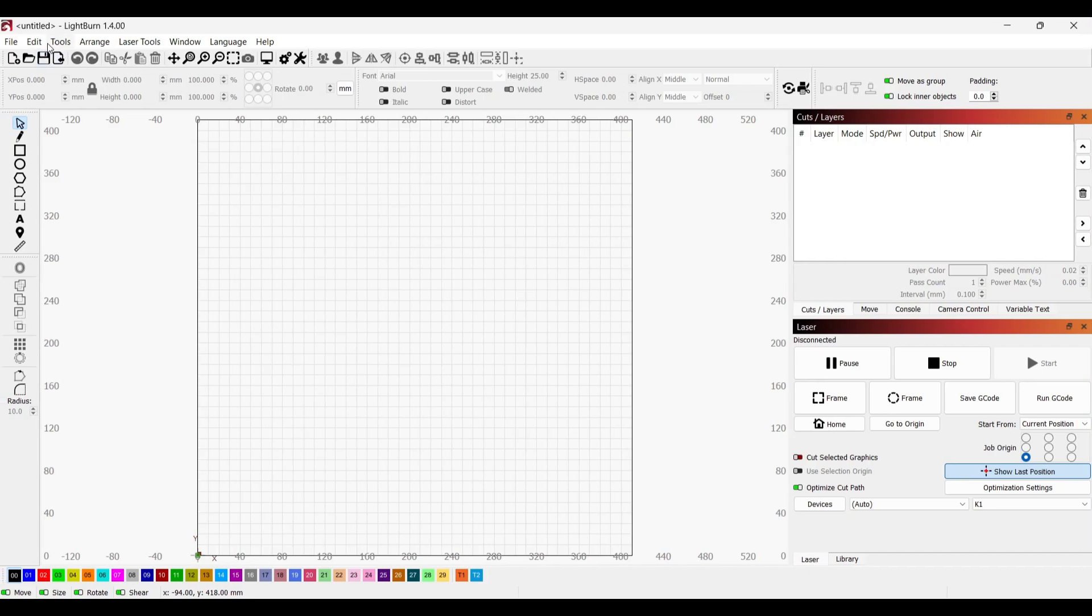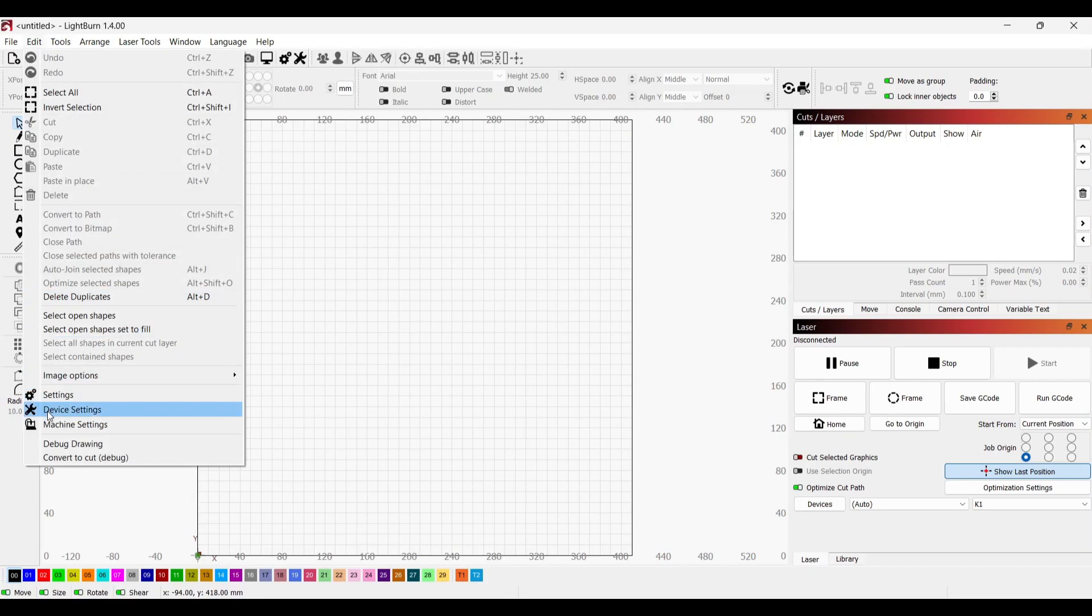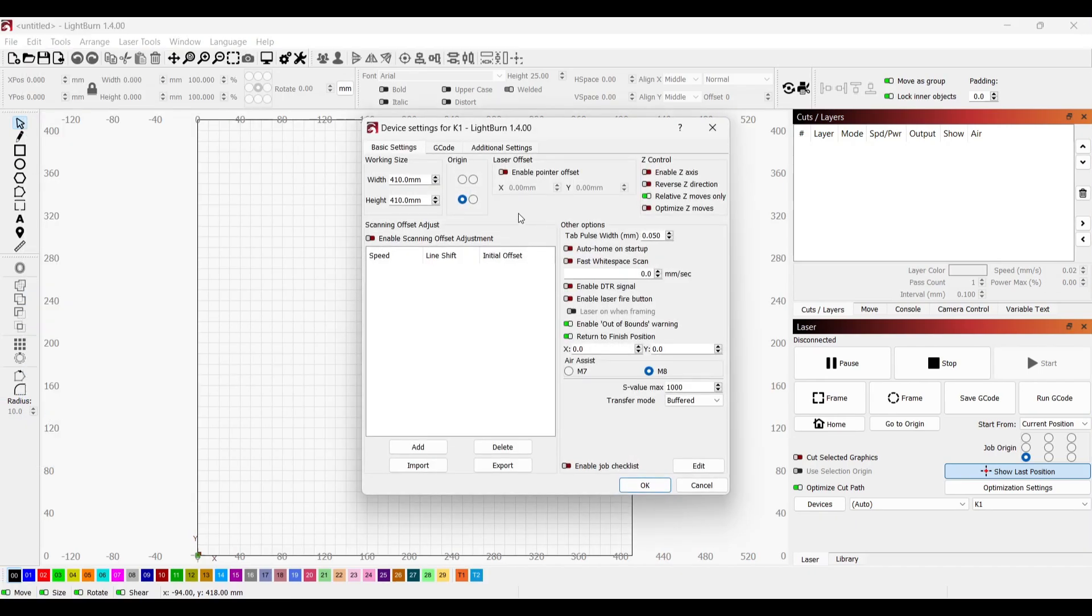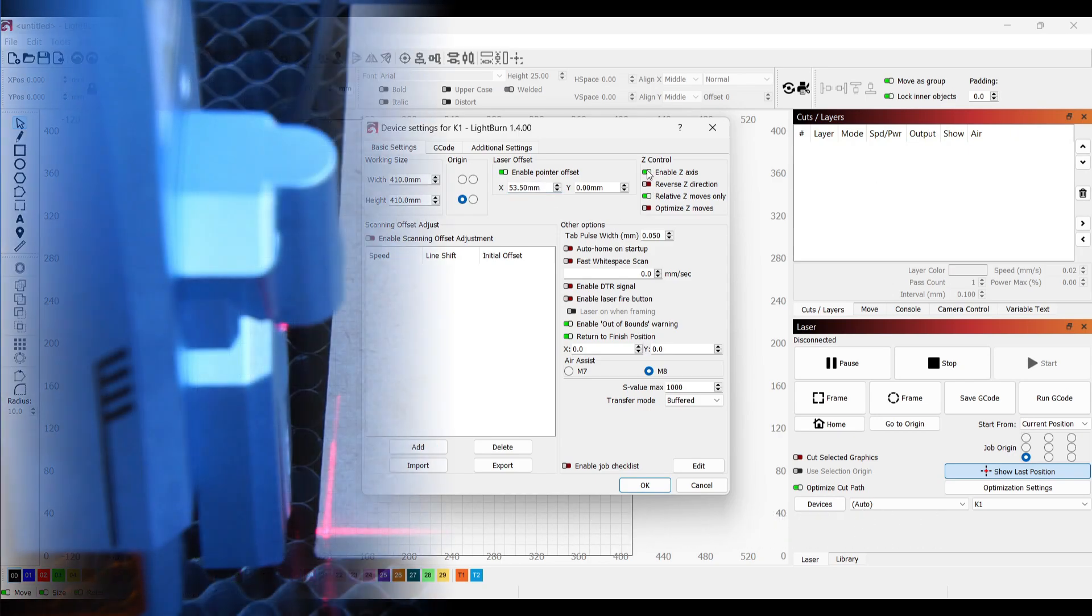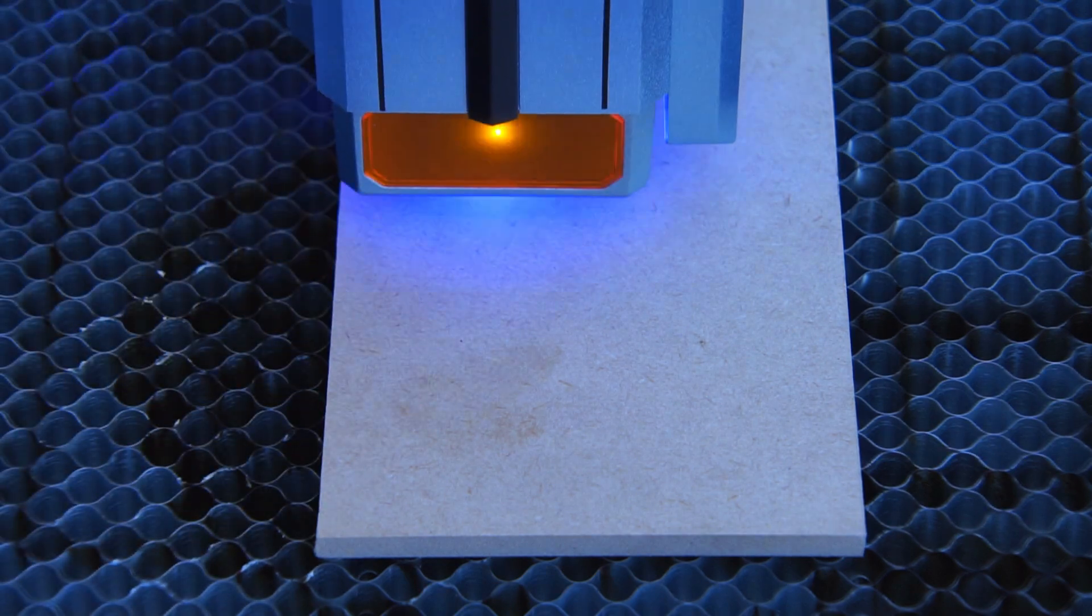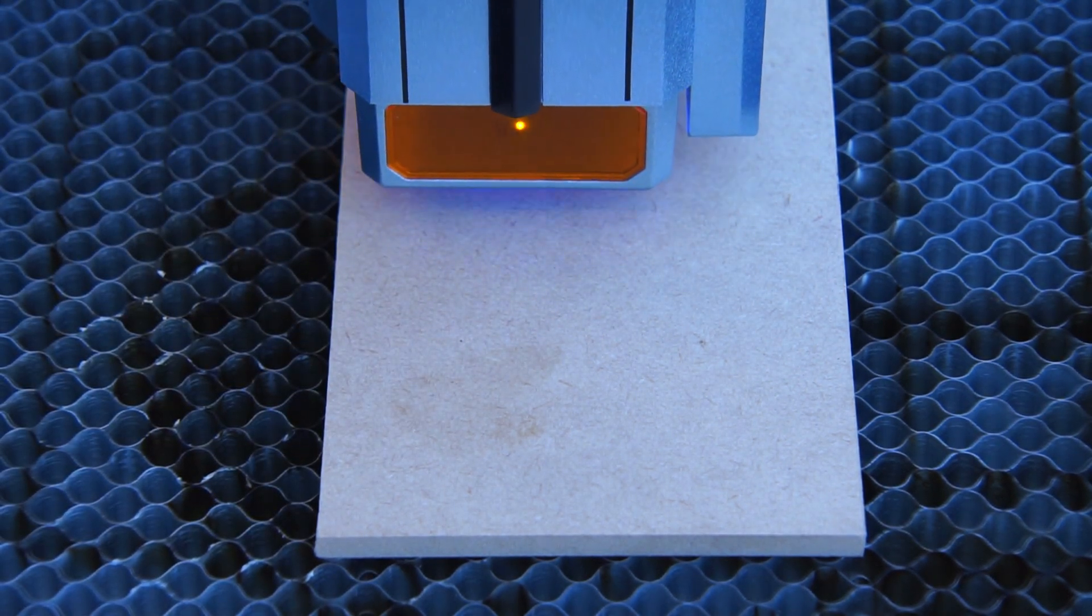To control the laser and generate G-code files I use Lightburn software. I've already covered how to set up and use Lightburn in my K1 Ultra review video. First I'll perform a material cut test on 6 millimeter MDF.